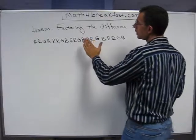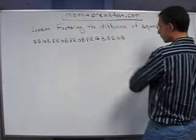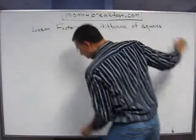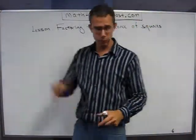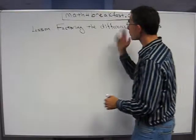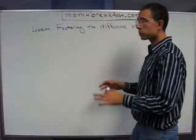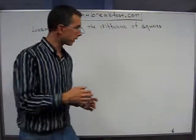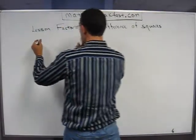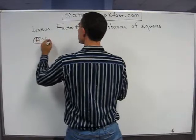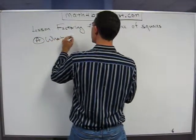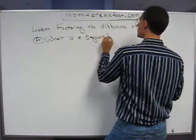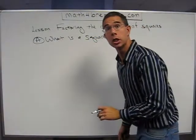Patterns. And that's what we're going to use in learning how to factor the difference of squares — another lesson on factoring from MathForBreakfast.com. We've been learning factoring for the past few lessons. Now we have another situation where we're going to factor what's called the difference of squares, and we're going to use a pattern to help you do that. So, before we get there, we've got to address a couple items. First: what is a square?